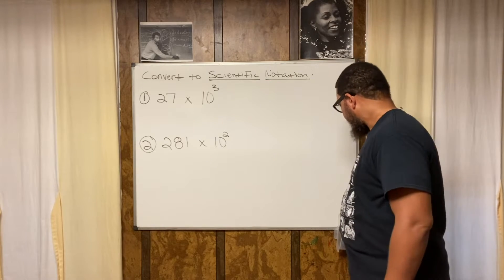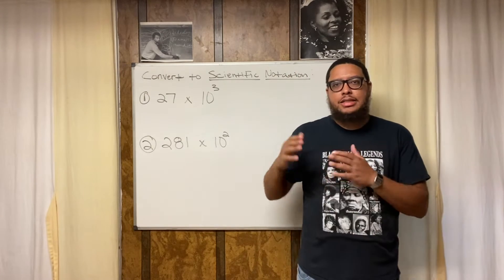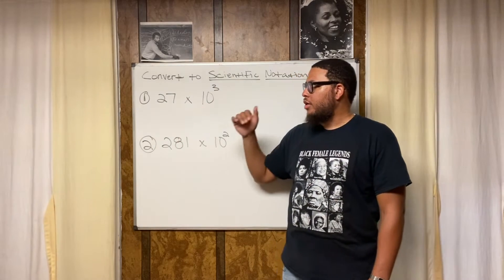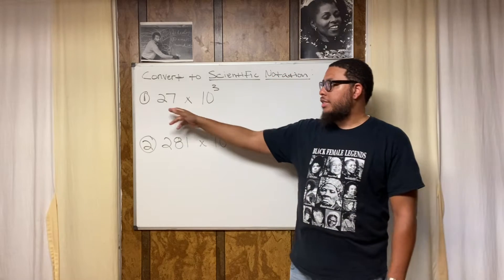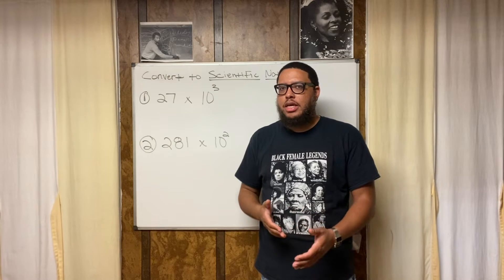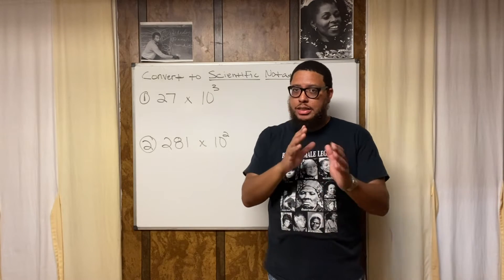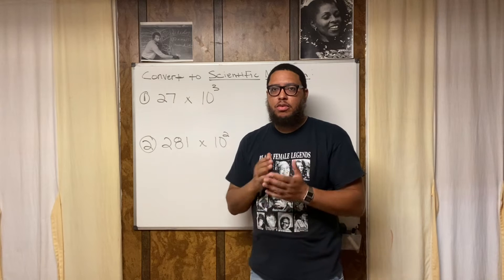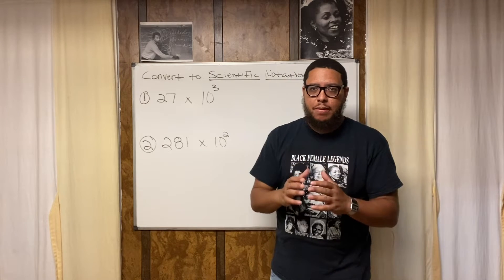Now, scientific notation. I like teaching these problems because they can be tricky. These are the kinds of problems that show up in homework or classwork to throw you off. Because if you see the instructions to convert to scientific notation and then you see 27 times 10 to the third, to the untrained eye you might say it's already in scientific notation — there's a 10 to the third right there. But look at this 27. Just know that 27 is more than 10.